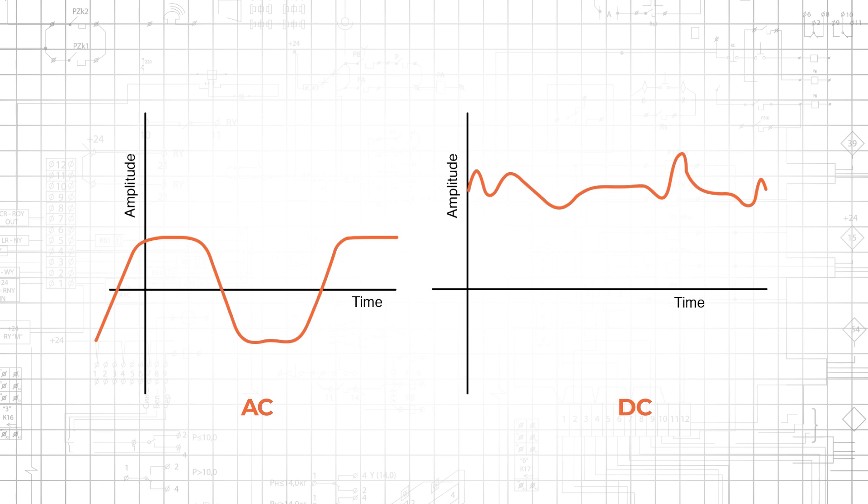The terms AC and DC can describe signals as well. The signal on the left is AC. The voltage regularly extends above and below the horizontal axis, which corresponds to an amplitude of zero volts. The signal on the right is DC. It has significant variations in amplitude, but the voltage is always in the positive portion of the graph.